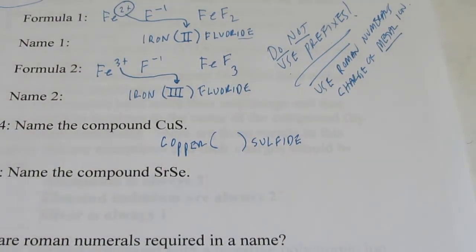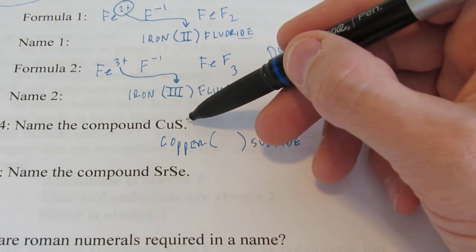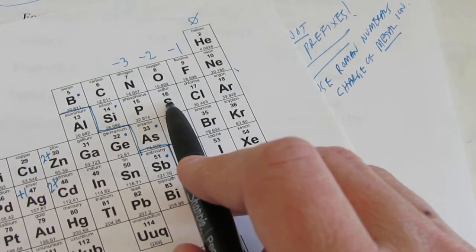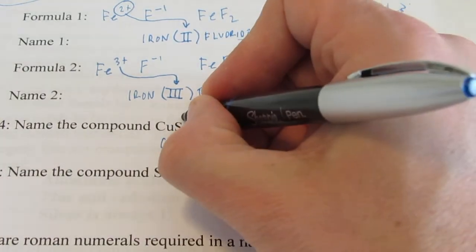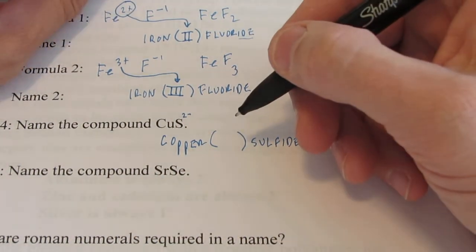I need to know the charge of copper. And that's the Roman numeral I put in there. But I don't know it. But I do know what sulfur's oxidation number is. Sulfur has 16 electrons. It wants to get to 18. So sulfur is 2 negative.